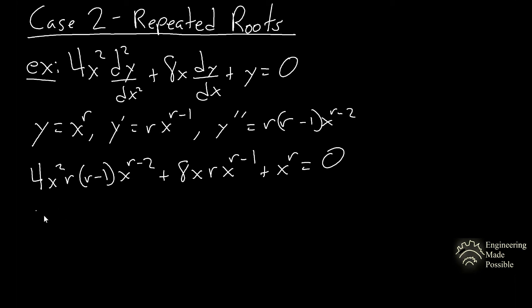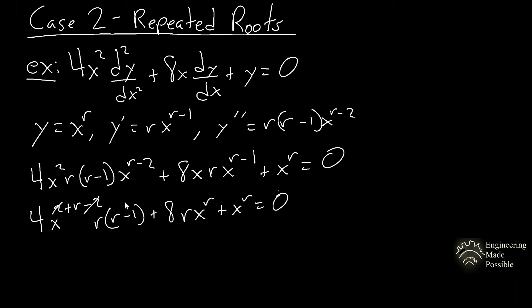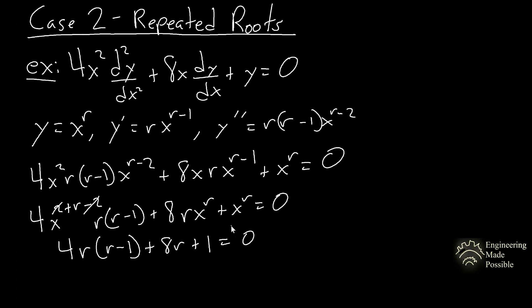Simplifying by adding exponents — x squared times x to the (r minus 2) gives x to the r, and the twos cancel — we get x to the r throughout. Dropping x to the r, the characteristic equation is 4r(r minus 1) plus 8r plus 1 equals zero. Distributing and simplifying gives 4r squared plus 4r plus 1 equals zero.